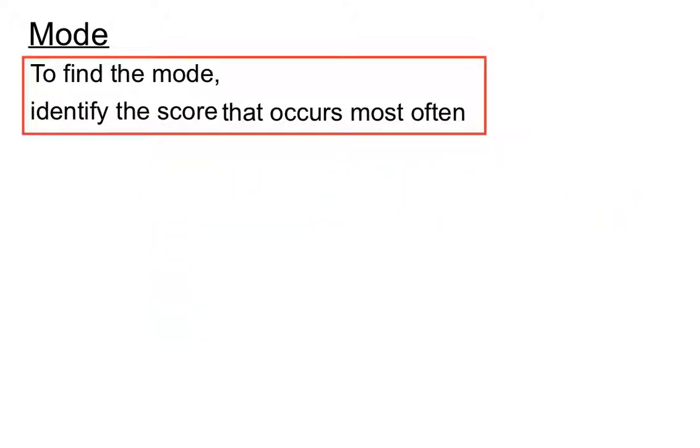Let's have a look at a couple of examples. To find the mode we identify the score that occurs the most basically. Okay, so we've got a bunch of scores here. Find the mode there.